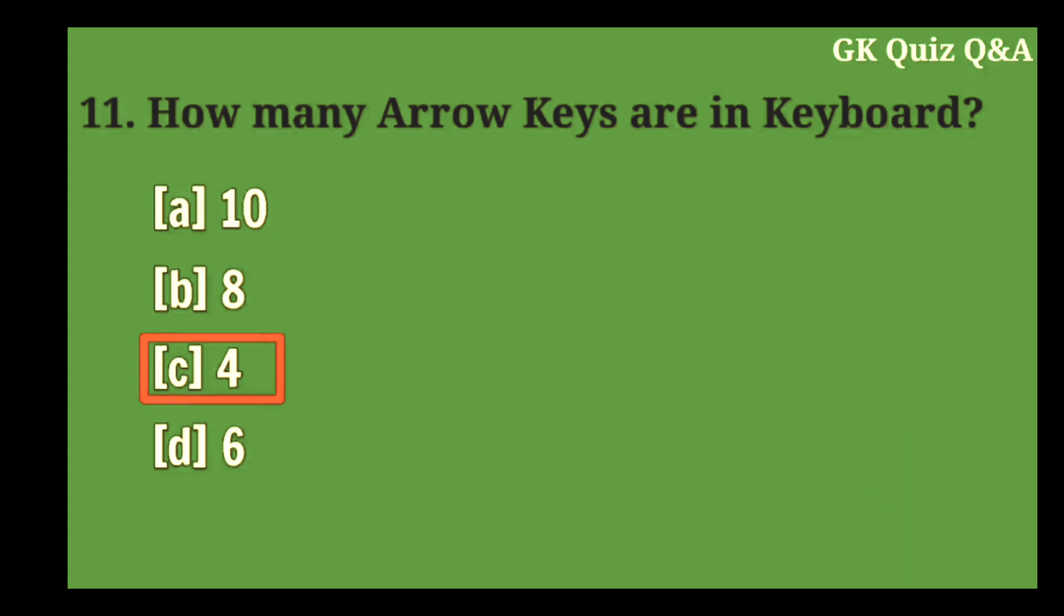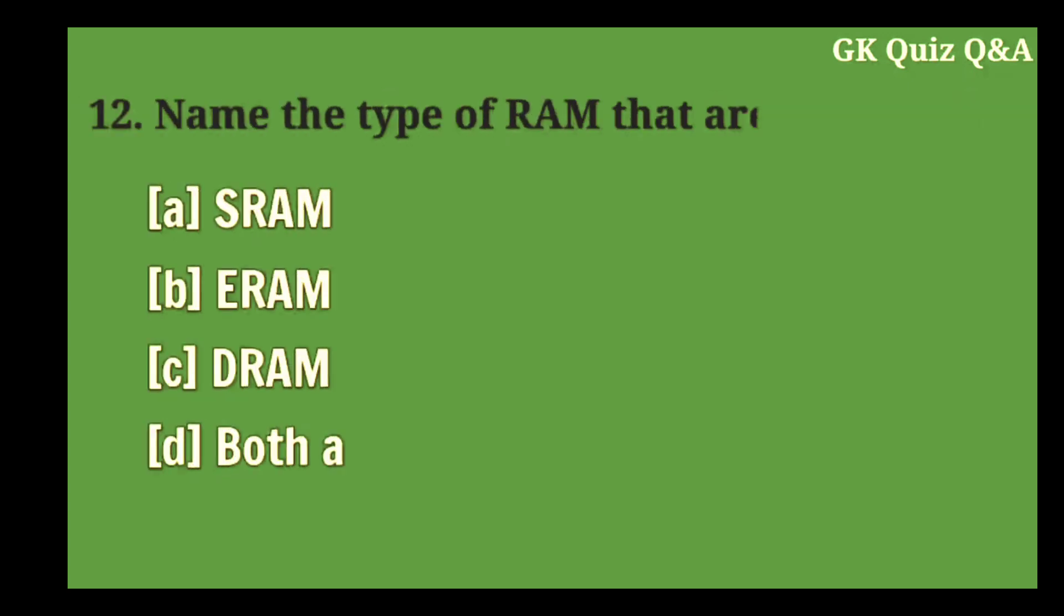Answer C: Four arrow keys. Name the type of RAM that are present? Answer C: Both A and C.